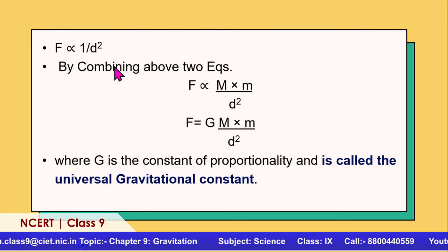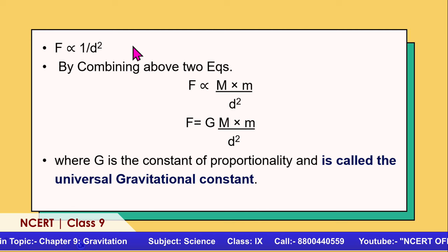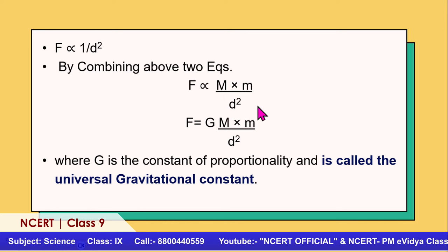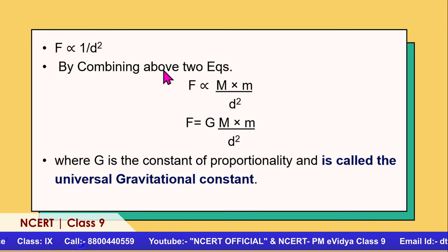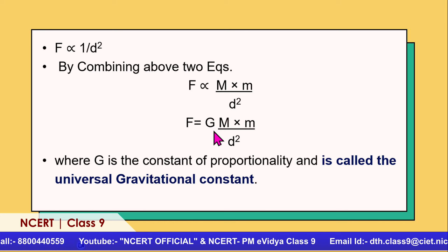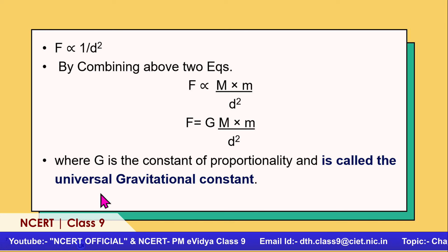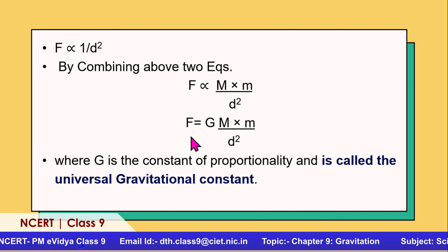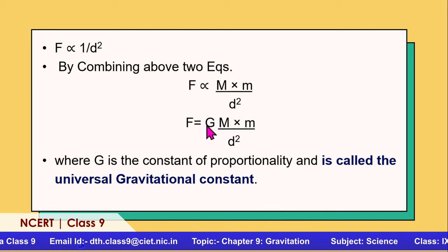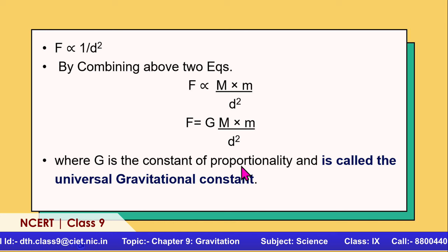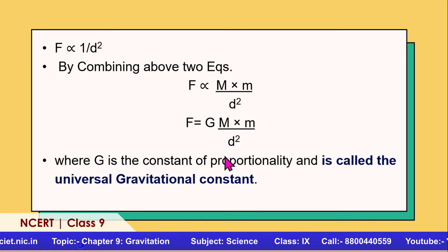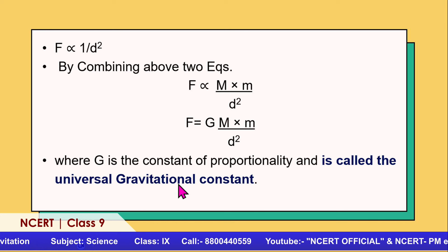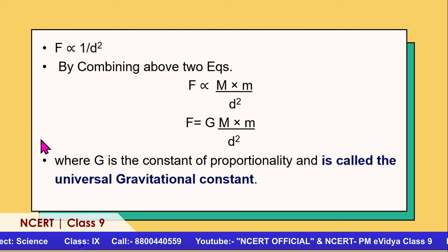Combining both proportionalities, F is directly proportional to M×m/d². Introducing the proportionality constant, we get the Universal Gravitational Constant, capital G. So the mathematical expression for the Universal Law of Gravitation becomes: F = G×M×m / d². Whenever asked for the mathematical expression, you write F = GMm/d².